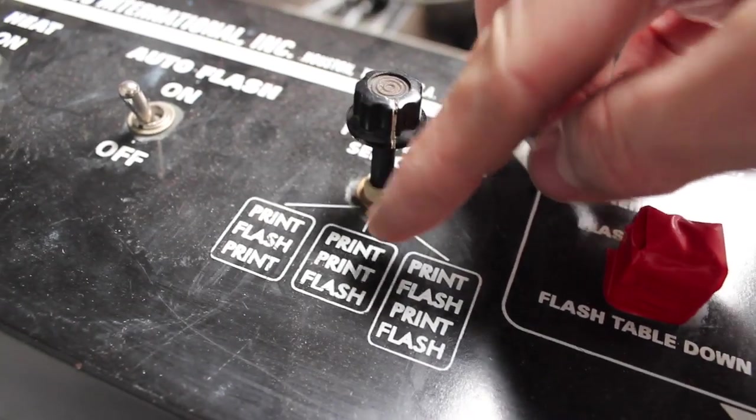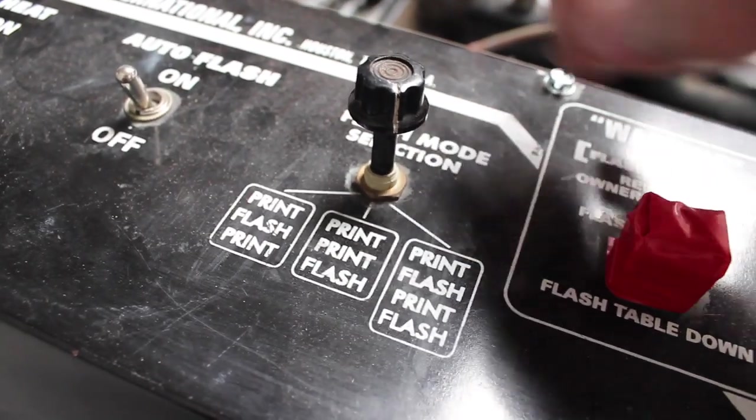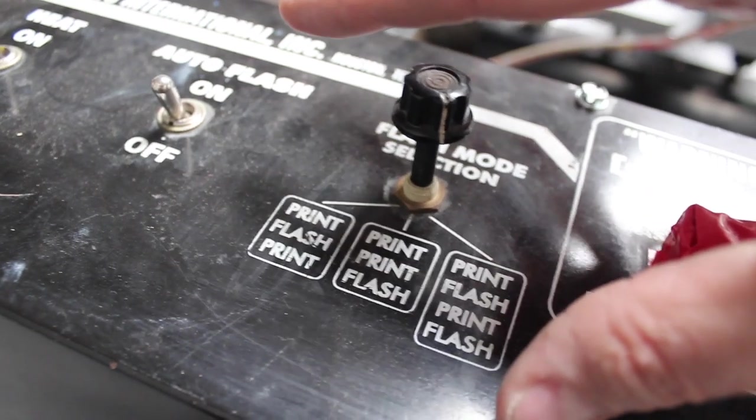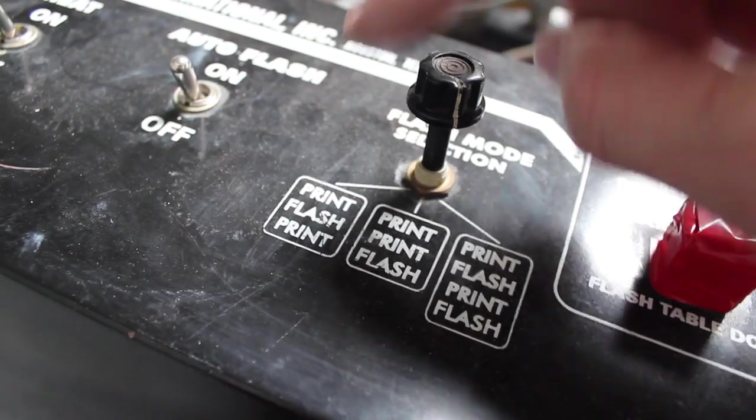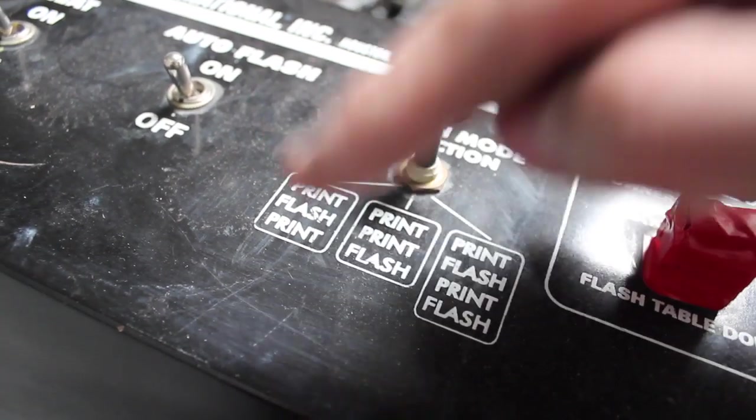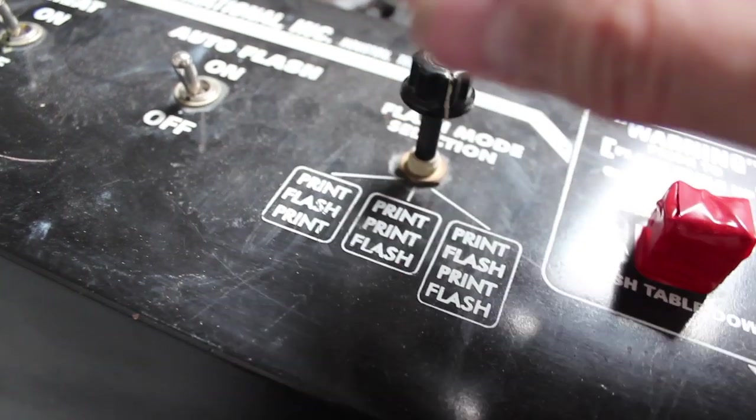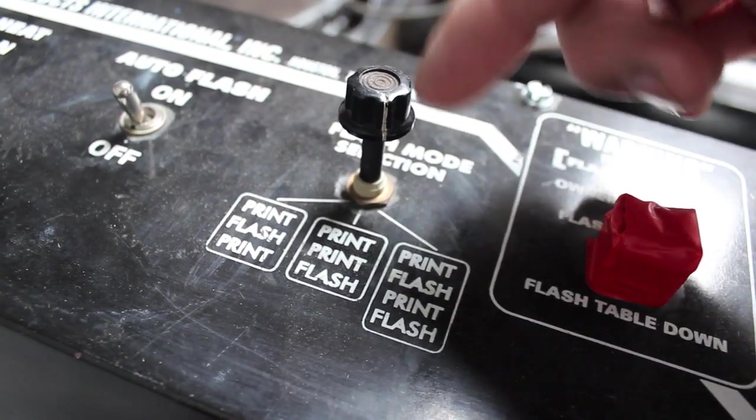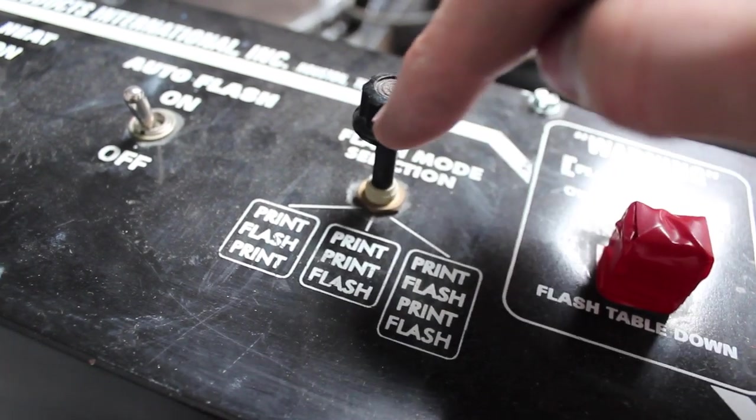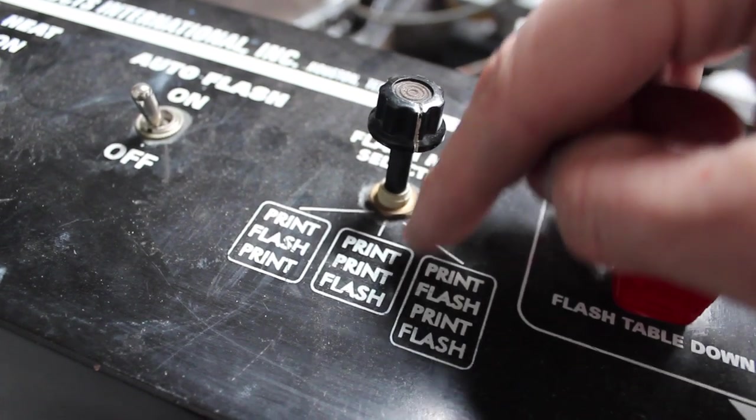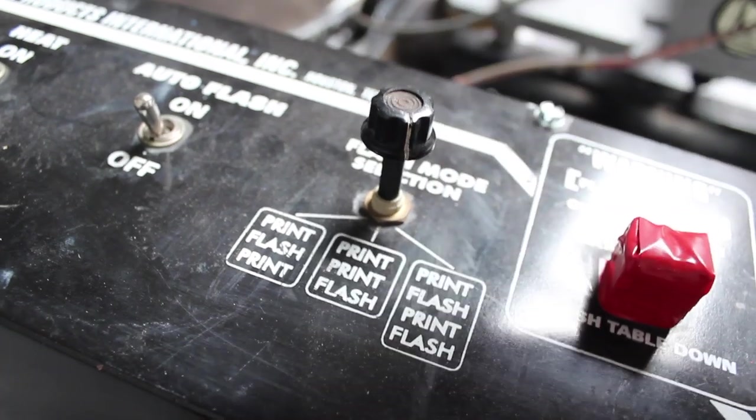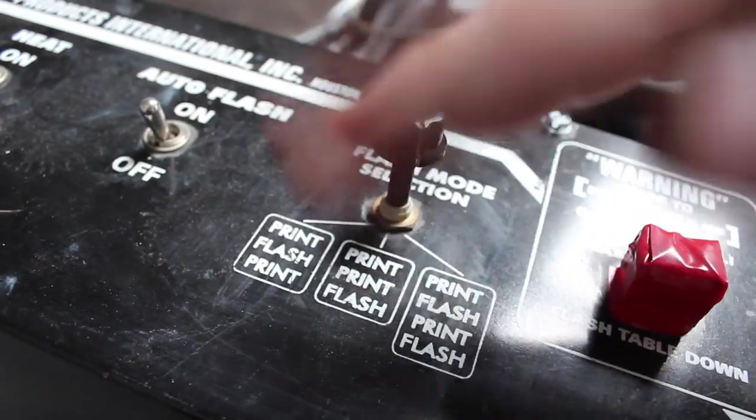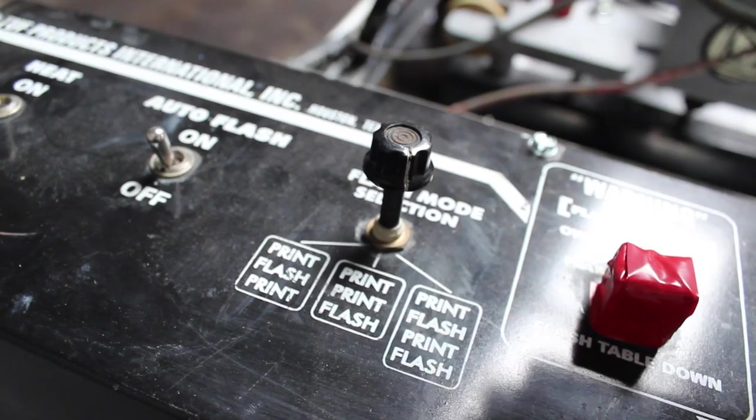With our particular models of flashbacks, you have print flash print setting, print print flash, and print flash print flash. Print flash print is great if you're doing a bright white print and you're just doing one color - you can print it, we'll flash it, and we'll print it again and you're done. With the print print flash setting, let's say you're just doing a white base and you want to make sure that white base clears nicely. Print print flash will make sure your mesh clears quite nicely and then it will flash it.